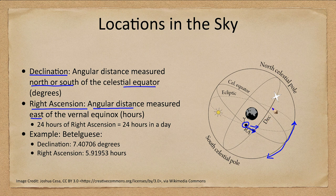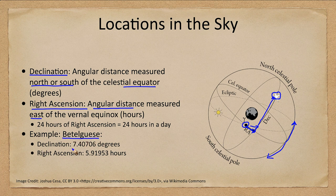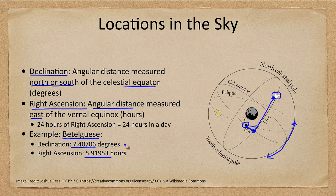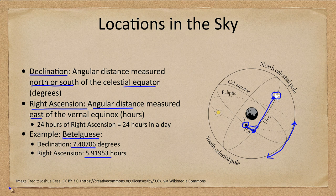With a right ascension and a declination, you can pinpoint the location of any object in the sky. For example, the bright star Betelgeuse in Orion has a declination of 7.40706 degrees and a right ascension of 5.91953 hours. Note that with declination, we use positive and negative rather than north and south — so 7 degrees means 7 degrees north of the celestial equator. A right ascension of almost 6 hours means Betelgeuse is about a quarter of the way around the sky from the vernal equinox.